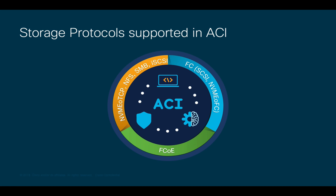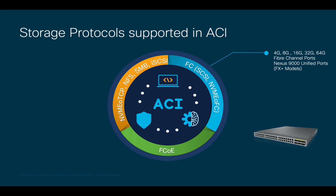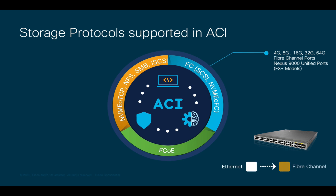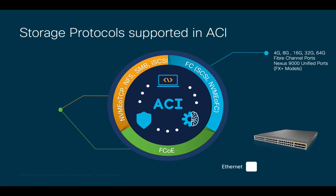ACI may run native Fiber Channel connections leveraging different speeds on Nexus 9000 FX switches, as well as other models that support unified ports. All you have to do is change the behavior of a port from Ethernet to Fiber Channel and insert the right SFP. ACI may also leverage 10, 40, 100, and 400GB Ethernet ports to run other storage protocols like FCoE, NFS, iSCSI, and SMB to name a few.